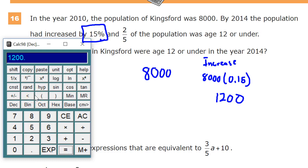Now from there, I need to add that increase back onto my 8,000. So total would be 8,000 plus 1,200. And that's 9,200.